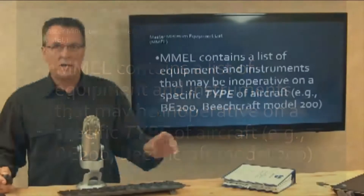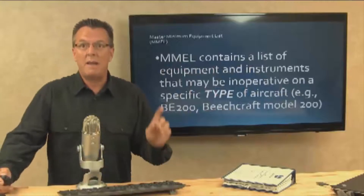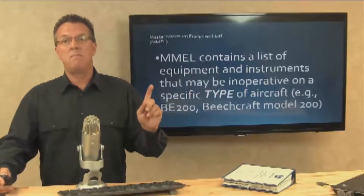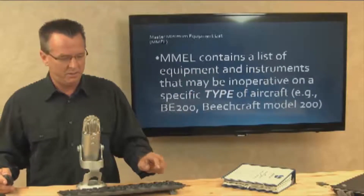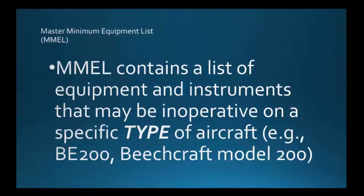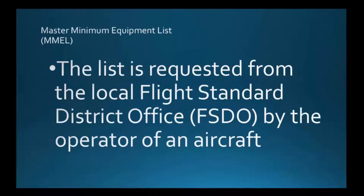First, let's go through what a master minimum equipment list is. A MMEL, or master minimum equipment list, contains a list of equipment and instruments that may be inoperative on a specific type of aircraft — for example, Beechcraft Model 200. The master minimum equipment list is requested from the local flight standards district office, the FSDO, by the operator of an aircraft.